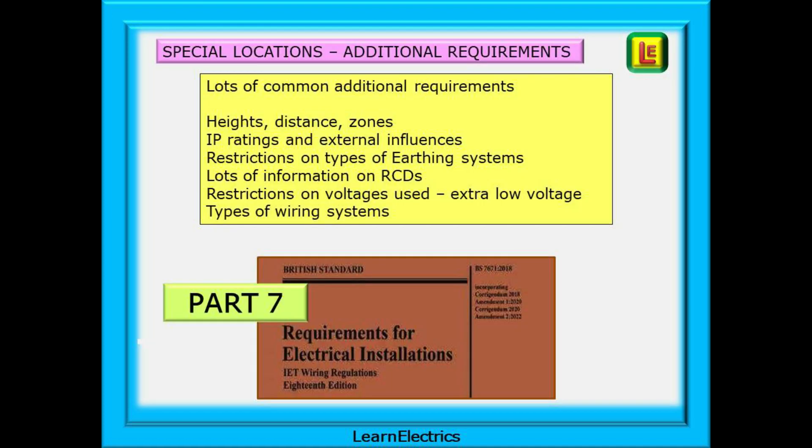There are lots of additional requirements in part 7 and many of them are common to several sections. Heights, distances and zones figure a lot in part 7 and do expect questions on zones, heights, etc. IP ratings and external influences are common in many sections. Earthing systems have a mention in most sections. Which types you can and can't use. Make sure that you read the information correctly.